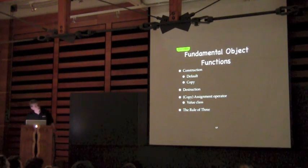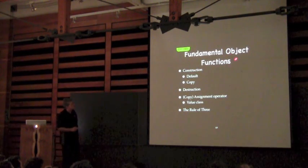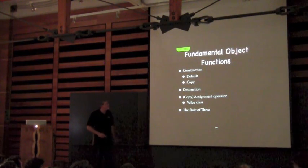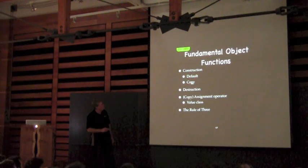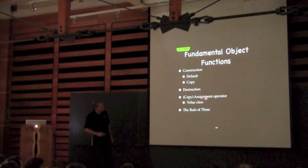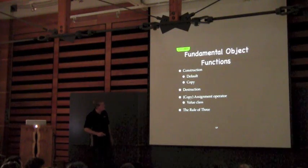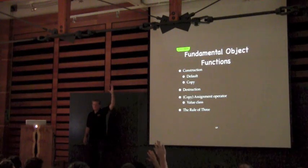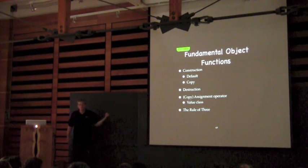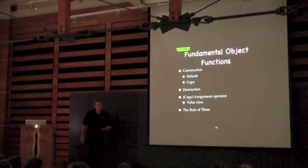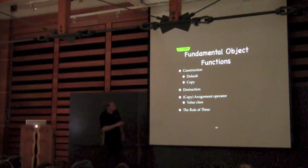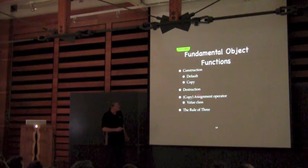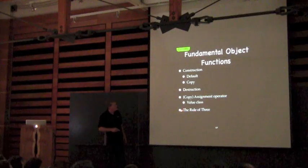So we're back in 2003. Let's talk about the fundamental object functions — these are things so important that the compiler will write them for you if you don't. That's construction — both default and copy — the destructor, and copy assignment if it's a value class. This brings up the rule of three. The rule of three: if you have any one of the copy constructor, destructor, or copy assignment operator, you probably need all three.